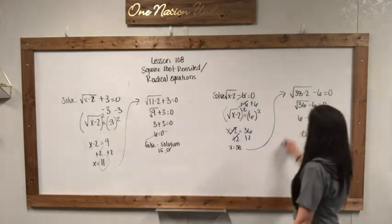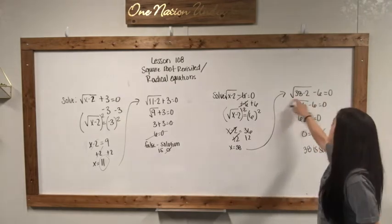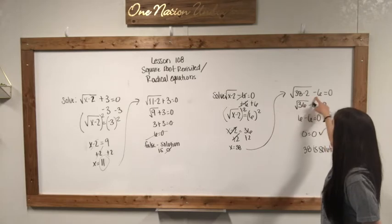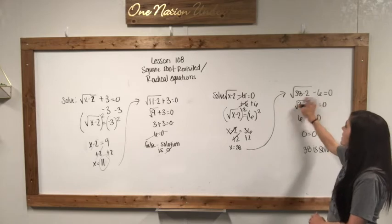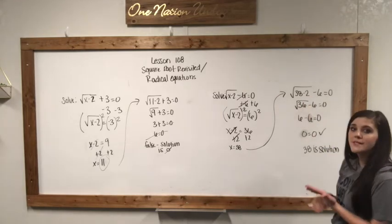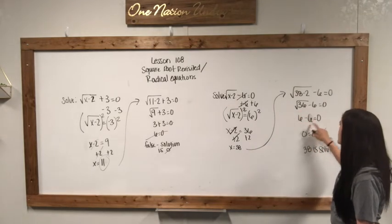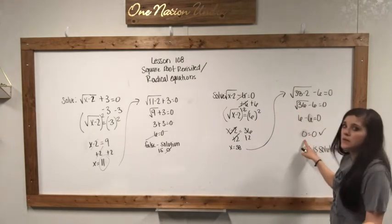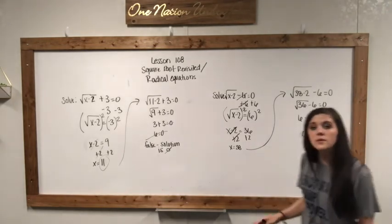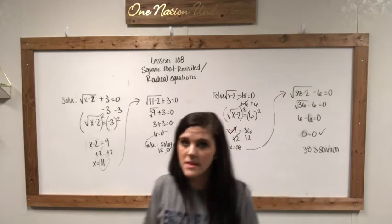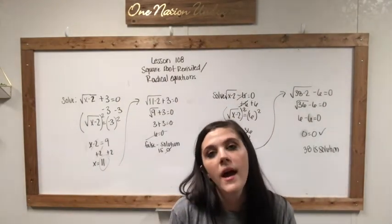Just like before, we're going to check this. Plug it back in: the square root of 38 minus two, minus six, equals zero. Thirty-eight minus two is 36. The square root of 36 is six. So we've got six minus six equals zero — six minus six is zero. Zero equals zero. So 38 is the solution to this one. Sometimes it'll work, sometimes it won't — that's why it's very important for you to check these after you do them.